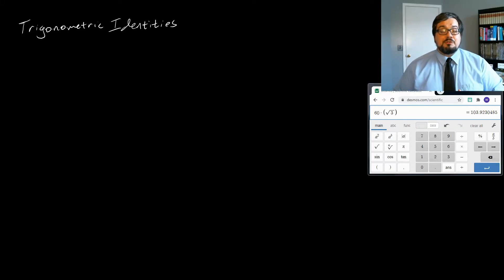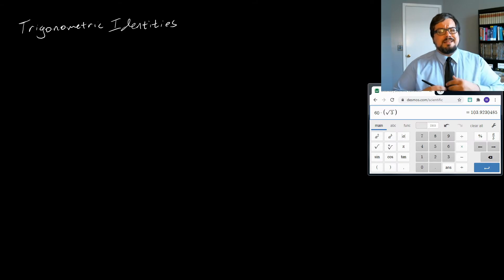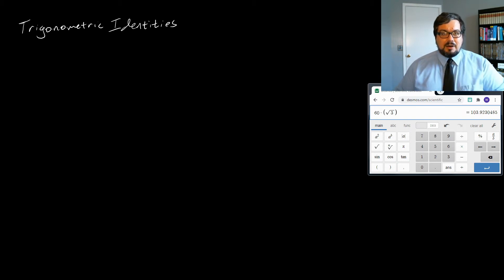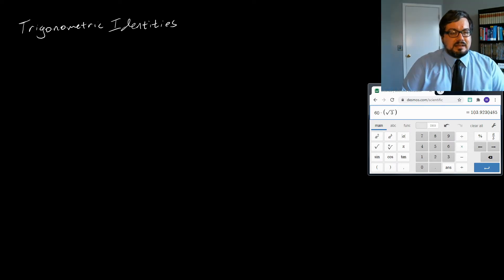Much of what we do in trigonometry is based on understanding the relationships between the various trigonometric functions. To start understanding this, we're going to look at some of our most fundamental trigonometric identities. We're going to treat this in much more detail later, but we need to start with the most basic ones now. In order to more efficiently do this, we want some notation.